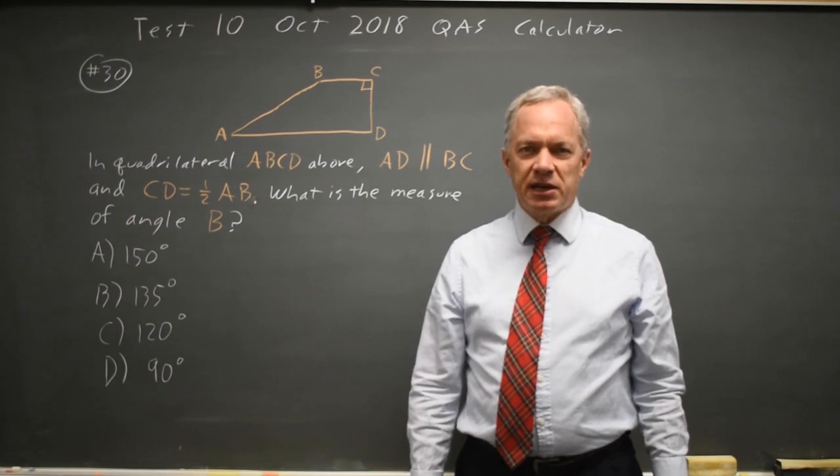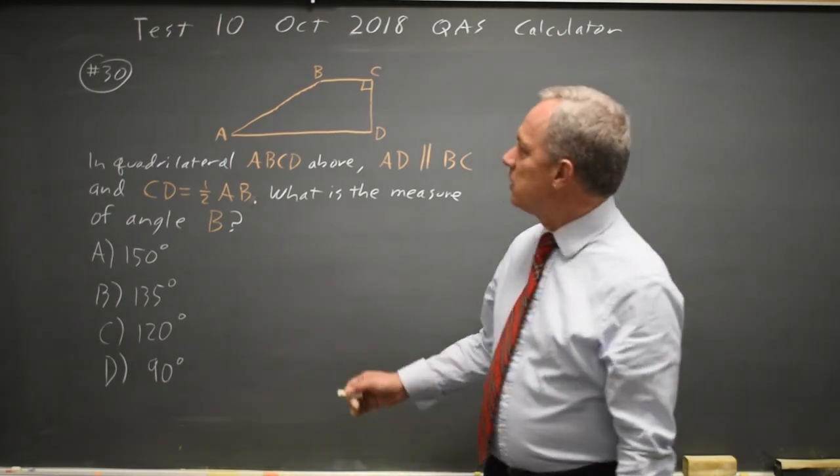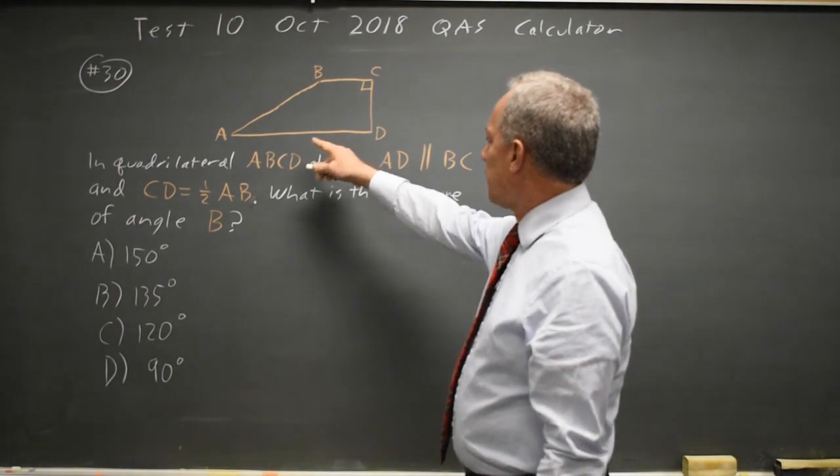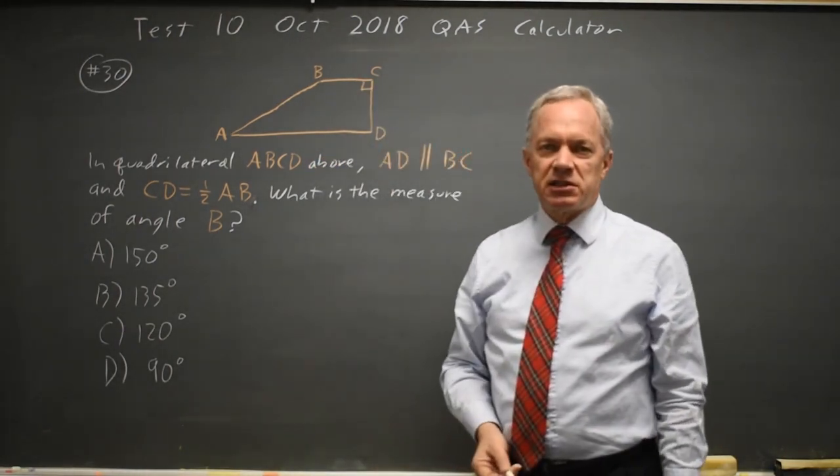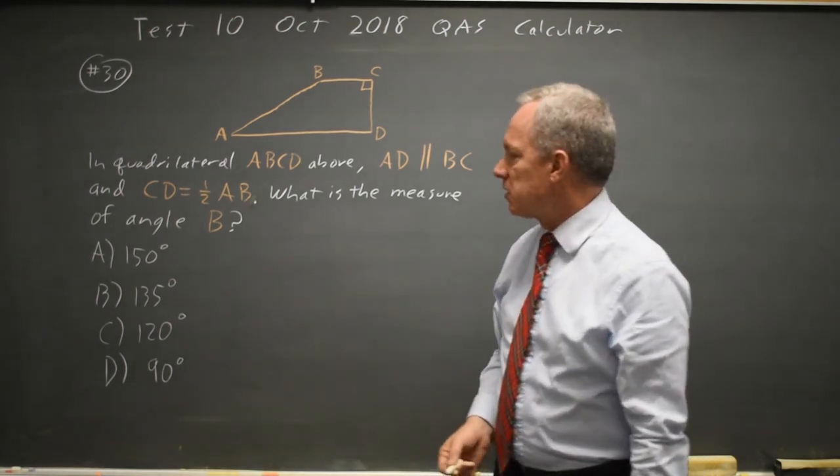This is question 30. College Board is asking for the measure of angle B in this quadrilateral where AD and BC are parallel. And this does not say not to scale, so you can assume it is to scale.